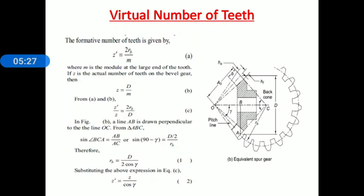Here m is the module at the large end of tooth — remember that all dimensions in bevel gears are specified at the large end. And z is the actual number of teeth on a bevel gear. We know z equals pitch circle diameter divided by module — capital D is the pitch circle diameter of the bevel gear. So z = D/m, consider this equation B.